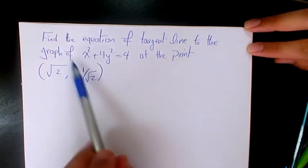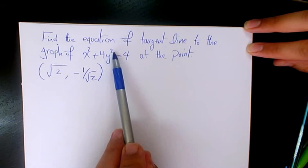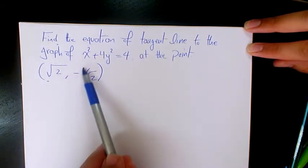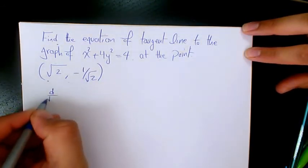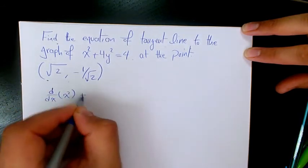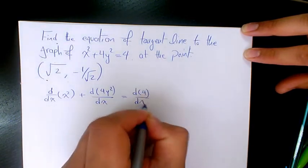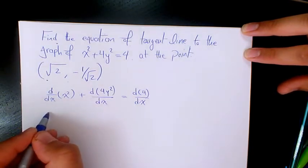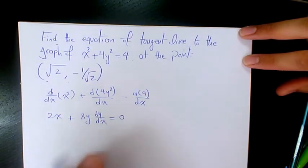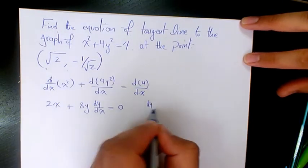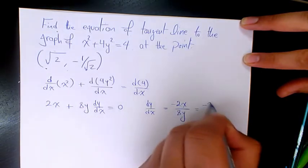The last example says: find the equation of the tangent line to the graph of x² + 4y² = 4 at the point (√2, -1/√2). We first find the derivative. The derivative of x² is 2x, the derivative of 4y² is 8y dy/dx, and the derivative of 4 is 0. Isolating dy/dx gives dy/dx = -2x/8y = -x/4y.